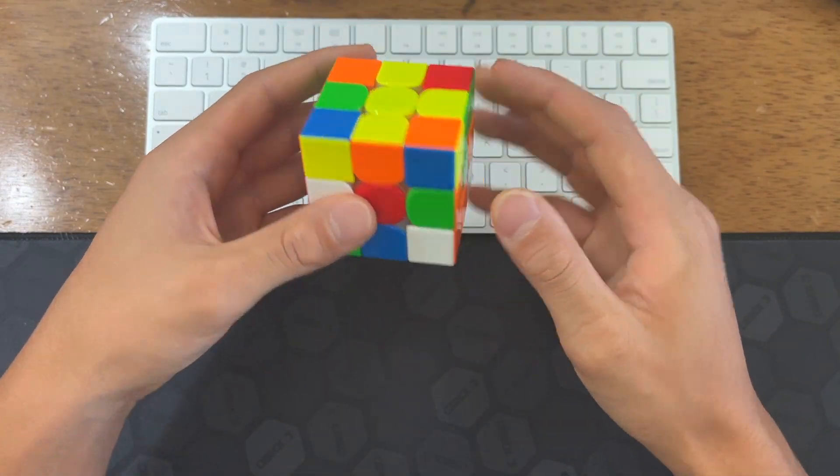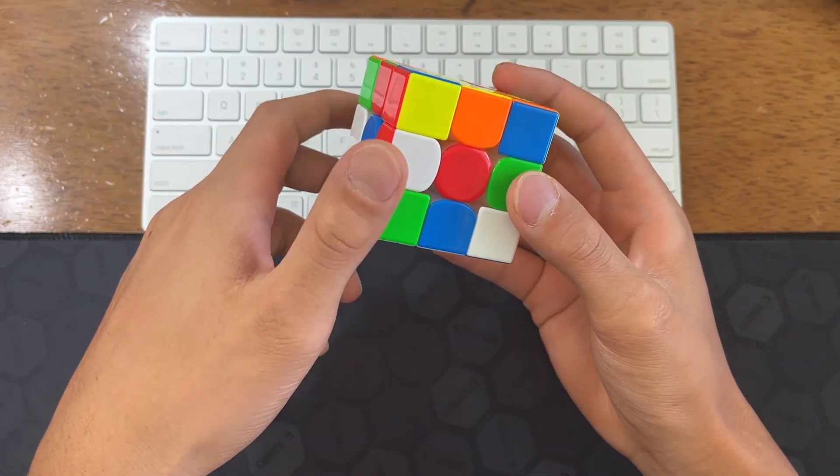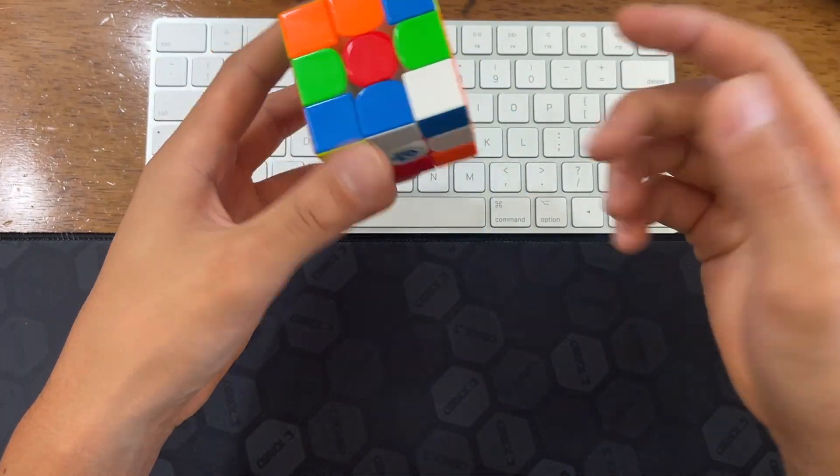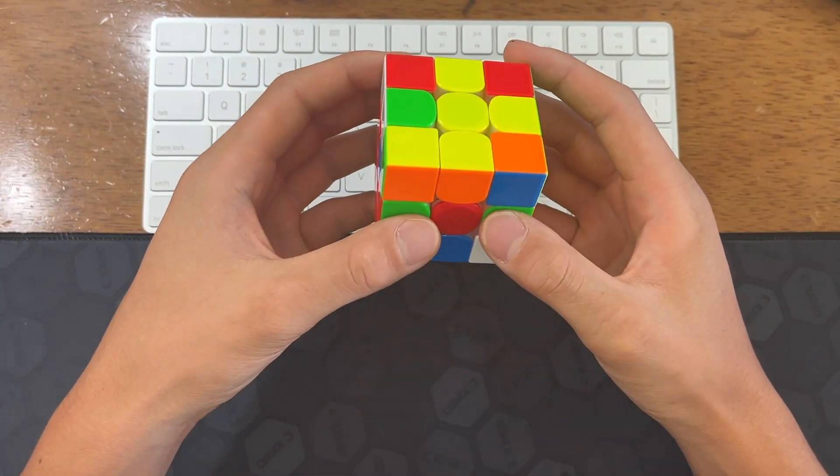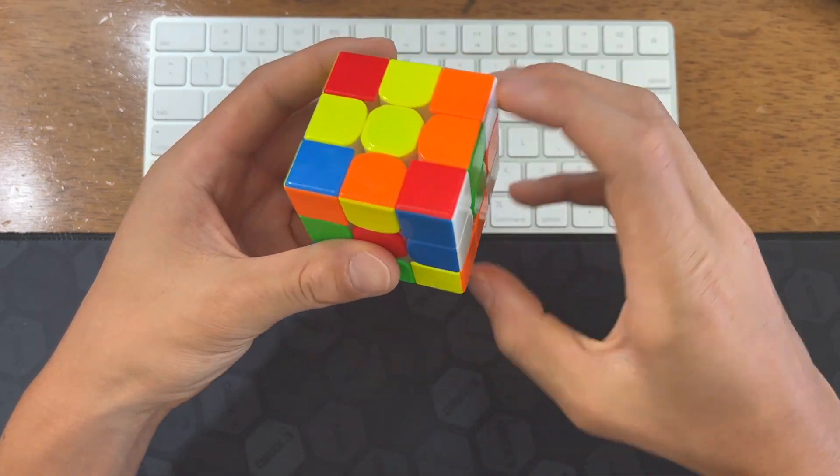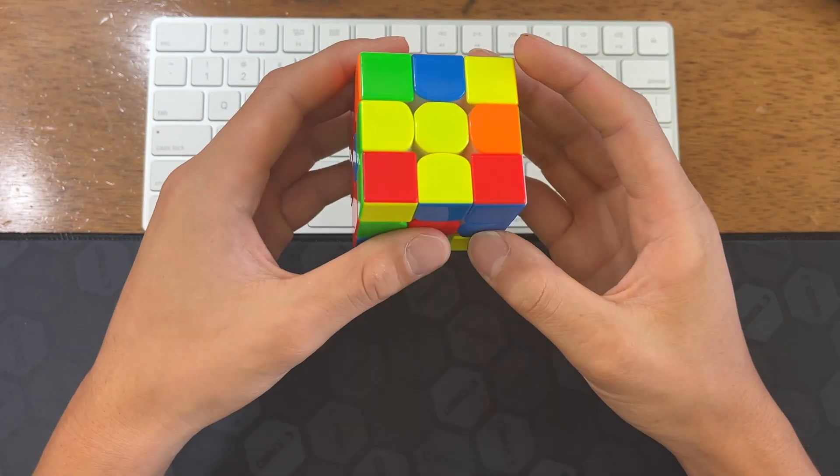Okay yeah, so I'll just solve this and this as my first pair. As you can see, when you just insert this here, these aren't lined up because this is supposed to be all the way over here and this is supposed to be there. So you can just insert that cross edge in its correct place and then you can take this pair into the top layer so you can solve it easier.